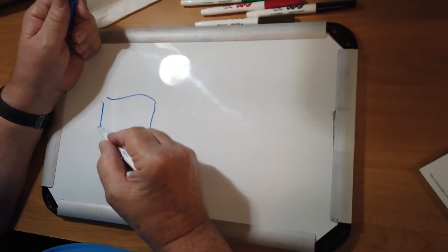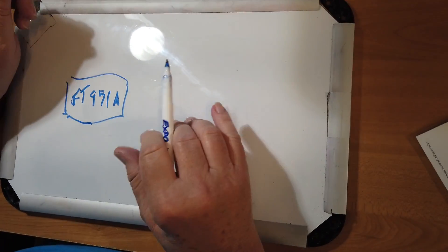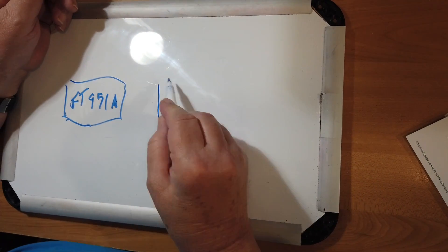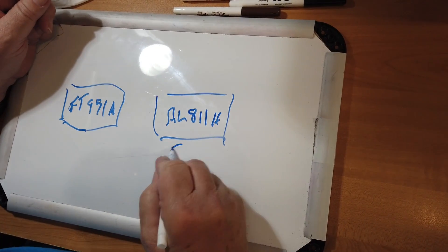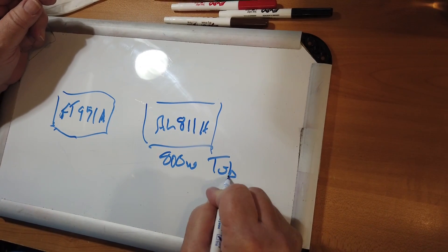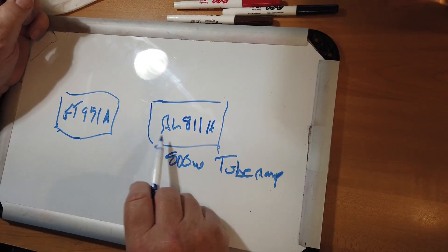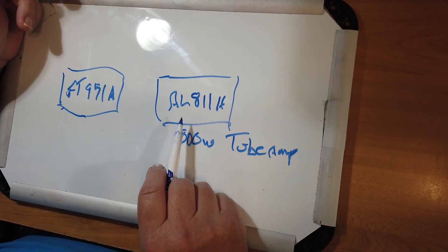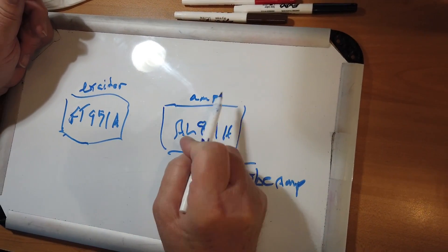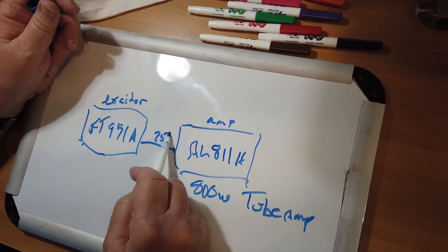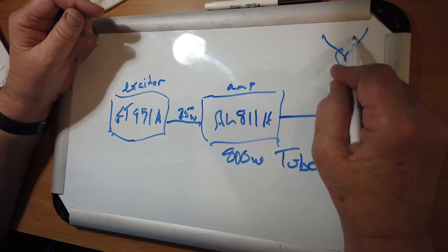He's got an FT-991A, which is a new, modern, current, still being sold radio, and he has an AL-811H, which is an 800-watt tube amp. You could say that this is current, it's being sold today. However, this is an ancient design, a very old amplifier designed back when the so-called exciter, this is called the exciter, and this is the amp. It takes about 75 watts to drive this thing to full power, and then this goes out to the antenna.